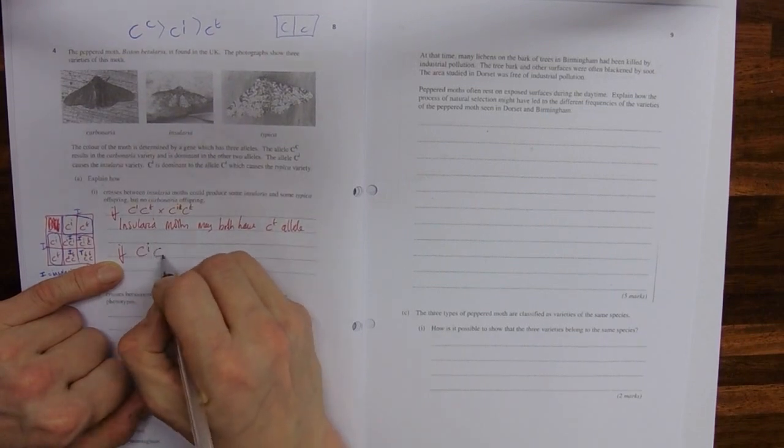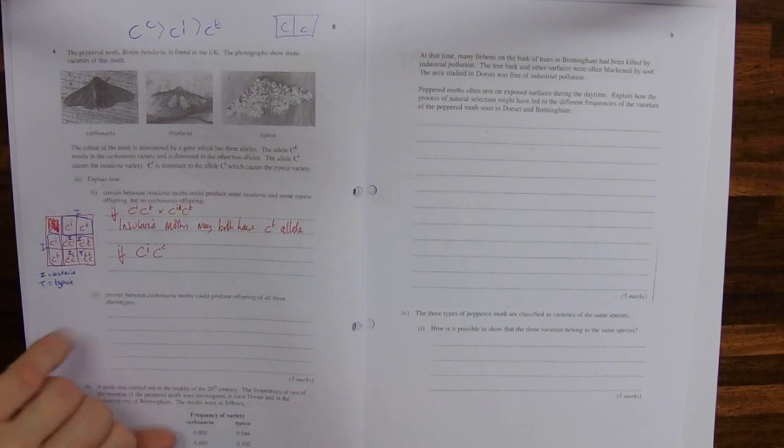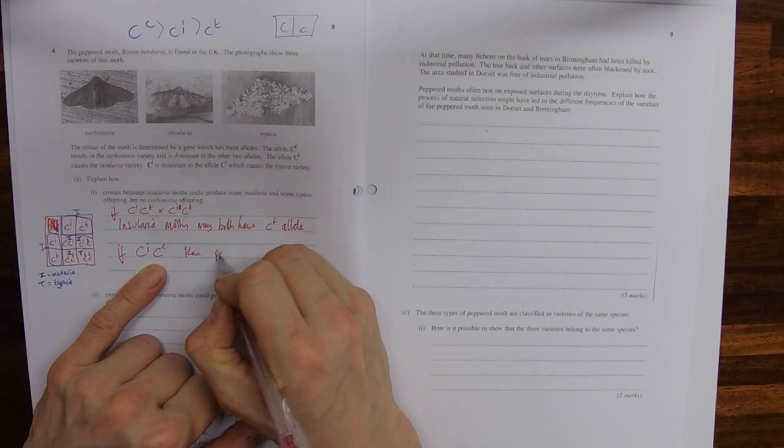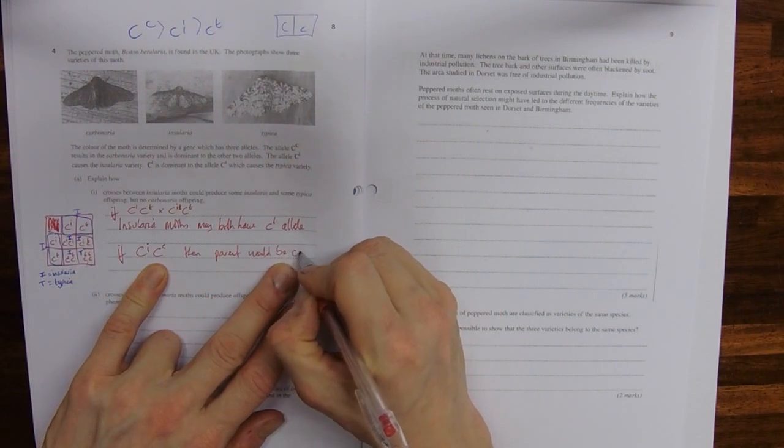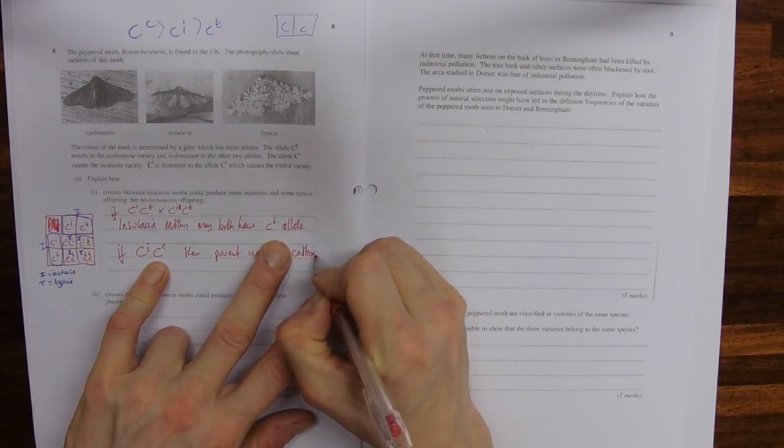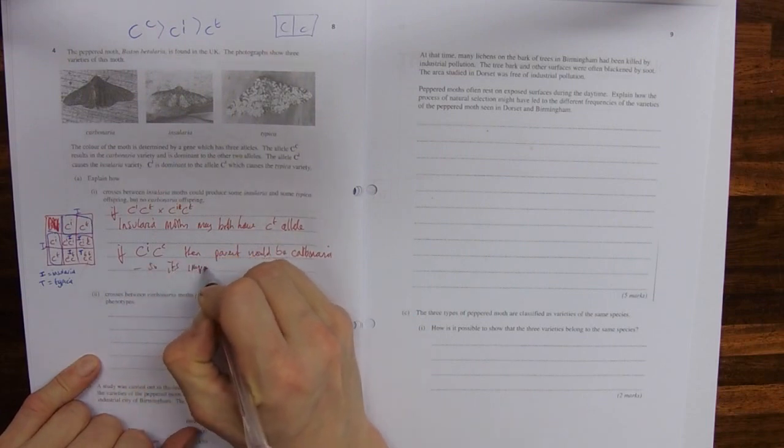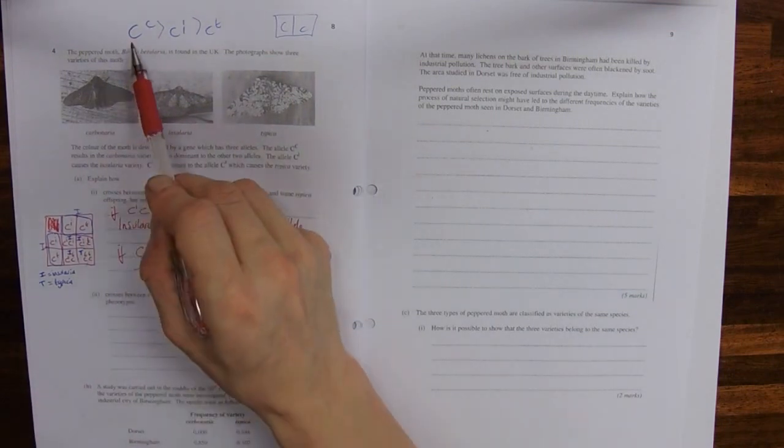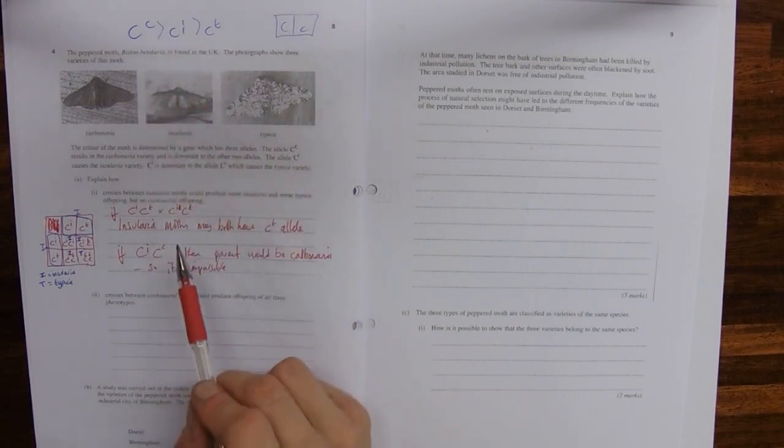Can we have a carbonaria? For example, if we had insularia moths, to produce a carbonaria we'd need to have a C allele in there. Then a parent would be carbonaria. So it's impossible because any presence of that allele, because it's dominant over the insularia allele, you'd see it. So it wouldn't be an insularia moth to begin with.